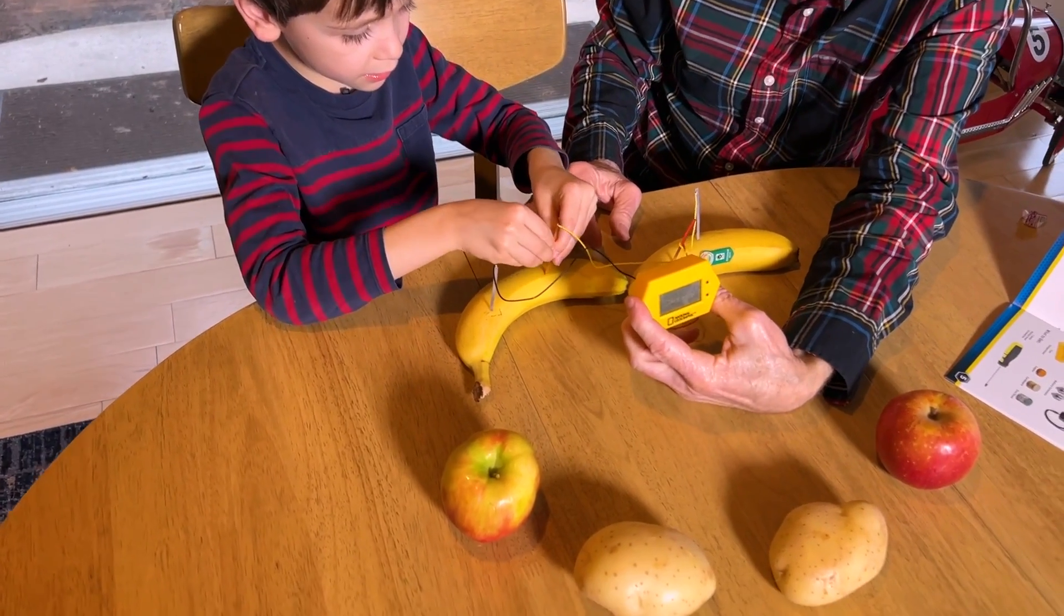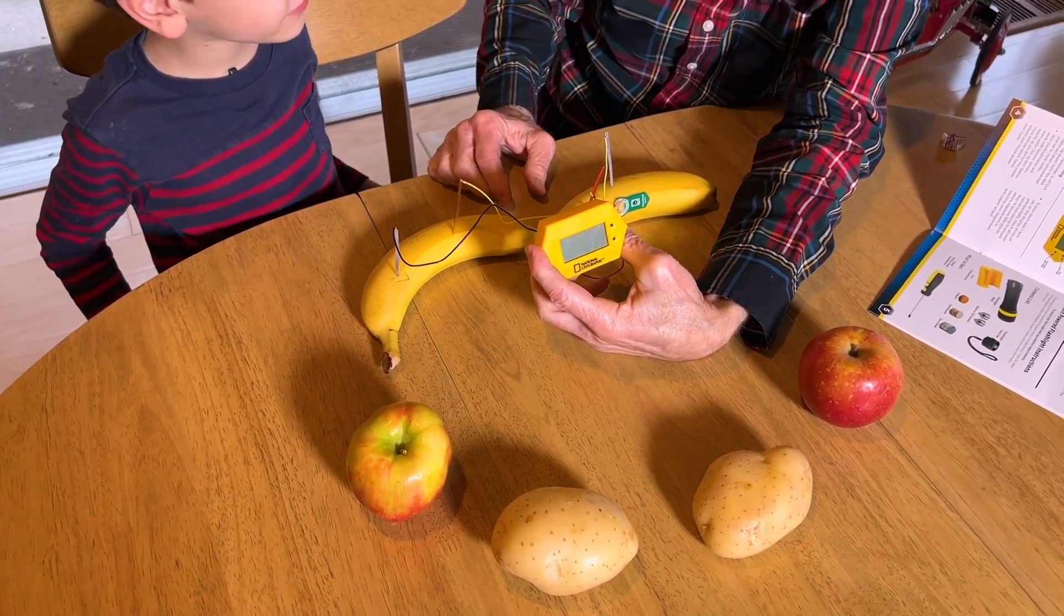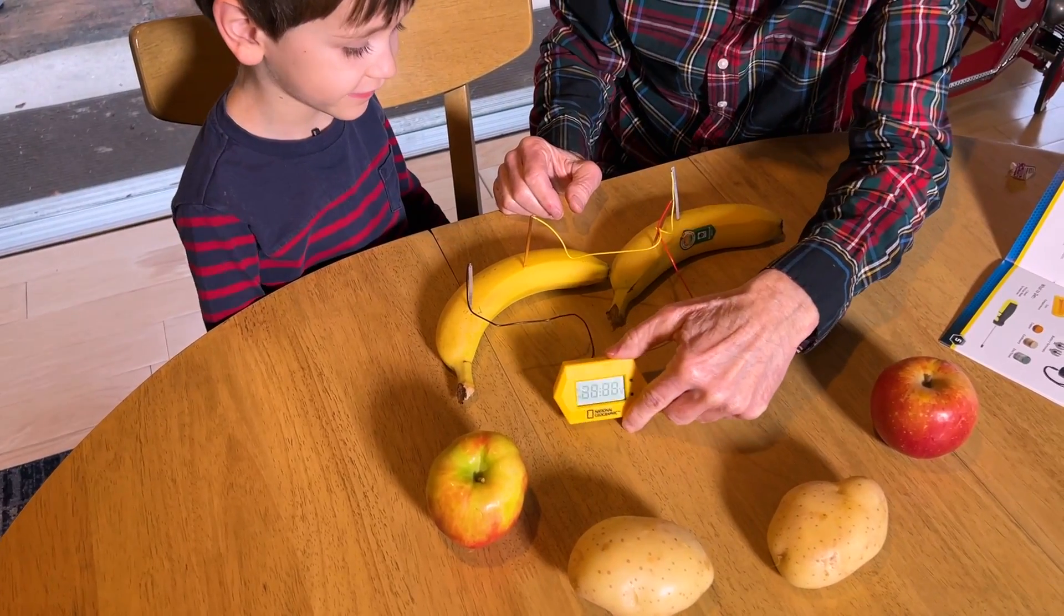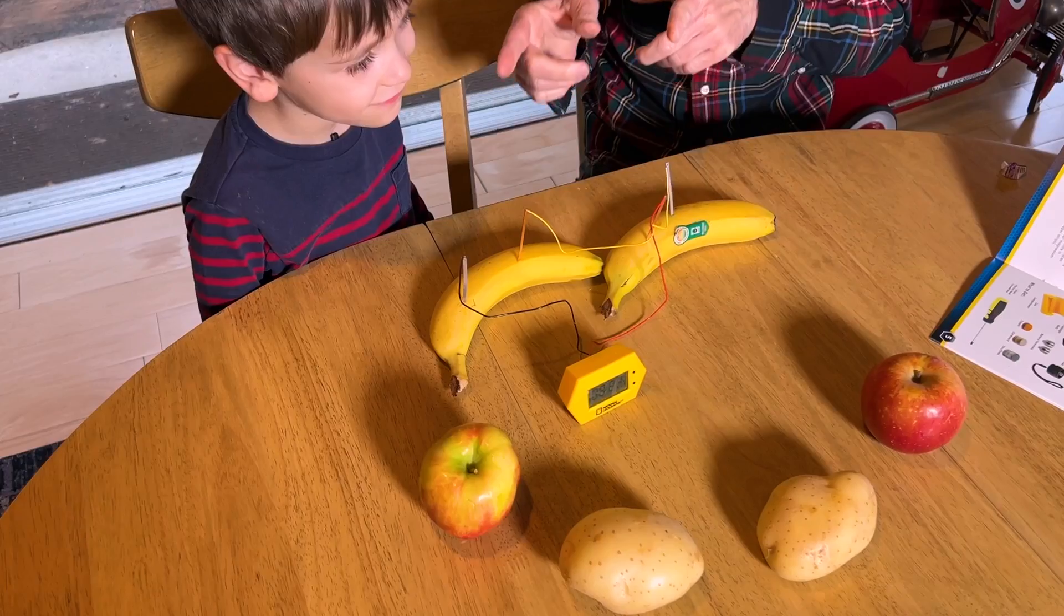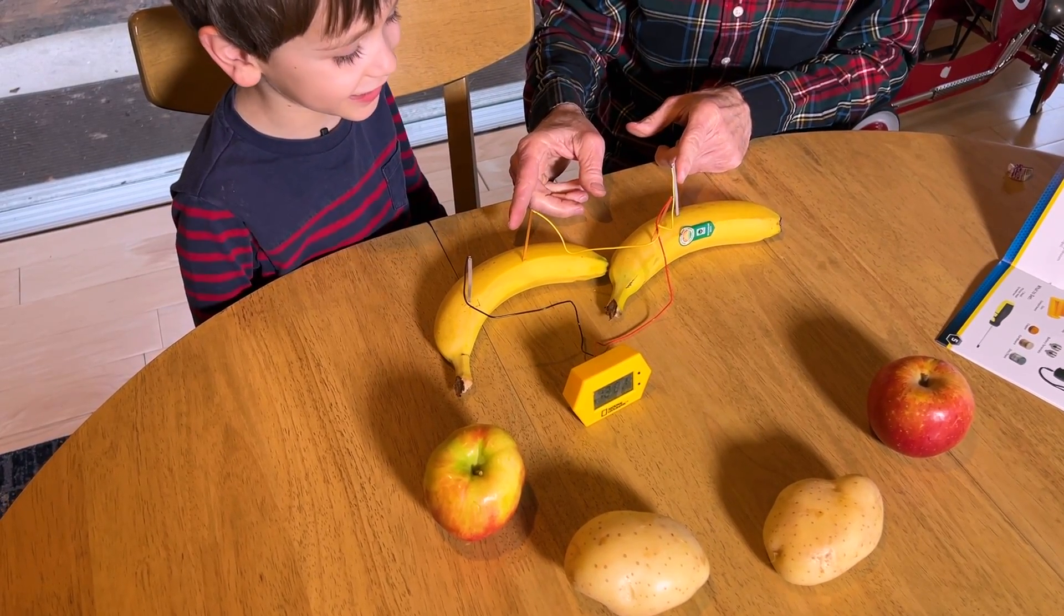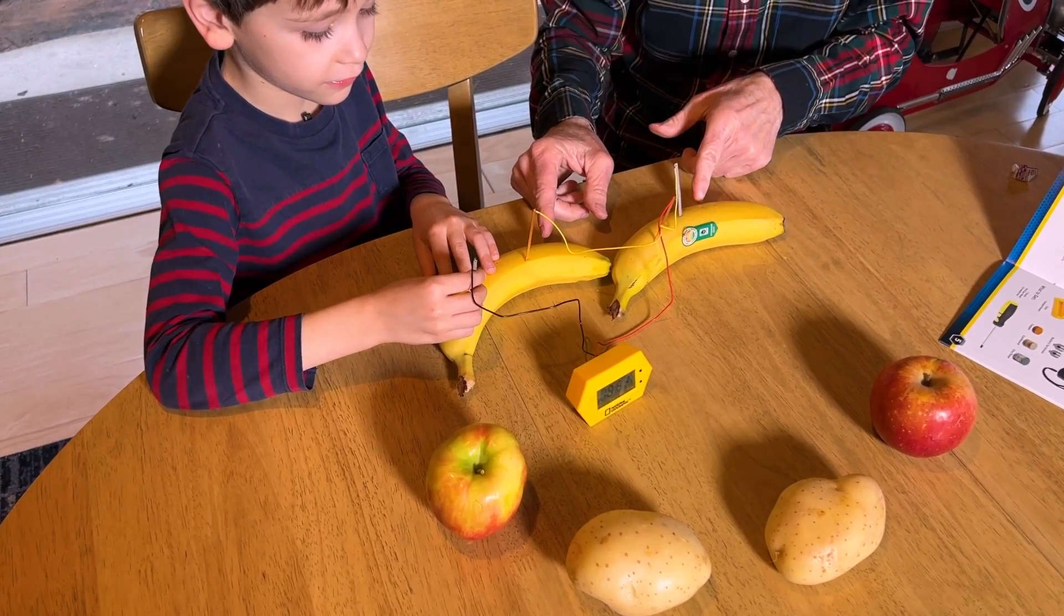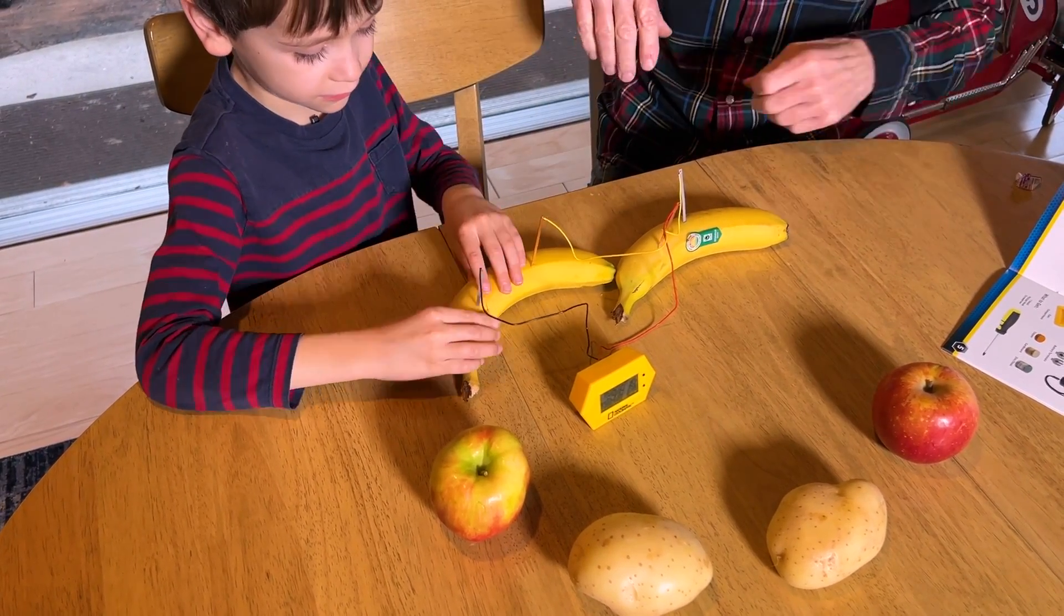Let's see what happens. I see some electricity flowing! Wow, so now we've got electricity from two bananas. So we did two potatoes, two apples, one apple one banana, and now two bananas, and we get electricity from everything.